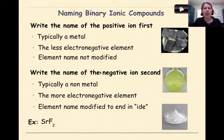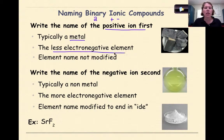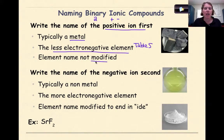Now let's talk about naming binary ionic compounds. Binary means two; ionic means we're involving a positive and a negative ion, making a compound from two or more different elements. When you name a binary ionic compound, you start by naming the positive ion first. In this course, the positive ion is typically a metal and also the less electronegative element. We can go to table S to determine electronegativity. The name of the first part of the compound is not modified.